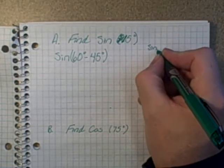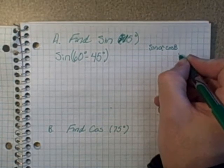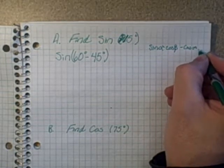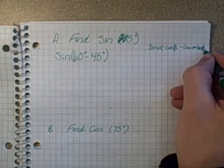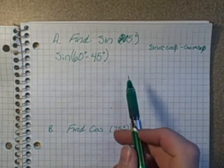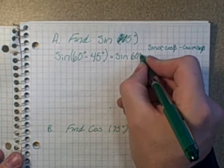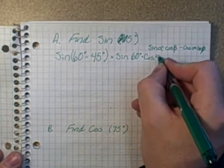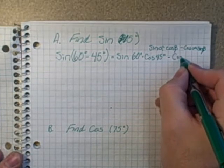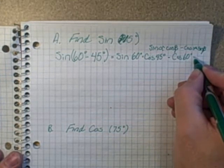The sine difference identity is sin(α)cos(β) - cos(α)sin(β), where the first term is alpha and the second term is beta. If we look at our form, that would be equal to sin(60°) multiplied by cos(45°) subtracting cos(60°) times sin(45°).